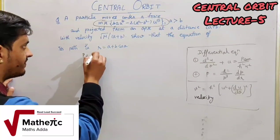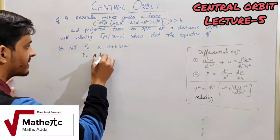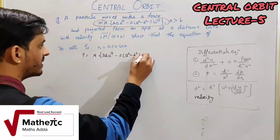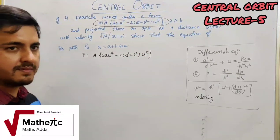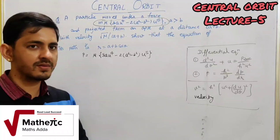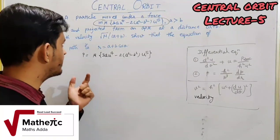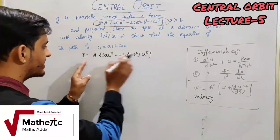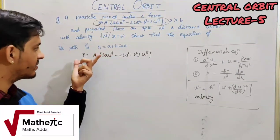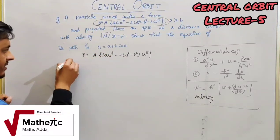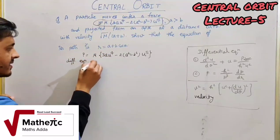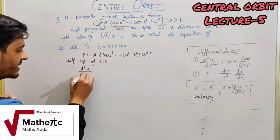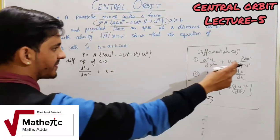P is equal to μ[3a·u⁴ − (2a² − b²)·u⁵]. Now, all terms of the force have been expressed in powers of u. We will get the differential equation of the central orbit: d²u/dθ² + u = P/(h²u²).